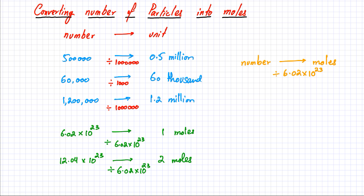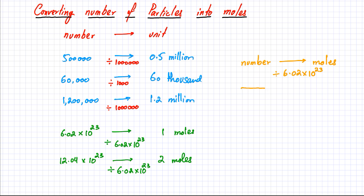Chemistry calculations are not done in thousands or millions because atoms, electrons, and molecules are present in such large quantities that you need a very large number. Only a mole represents such a large number. So to summarize: any number can be converted into moles by simply dividing by 6.02 × 10²³.